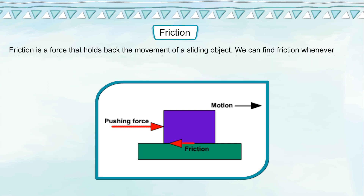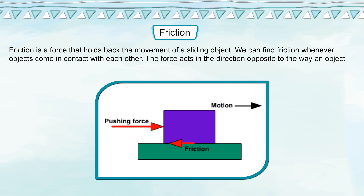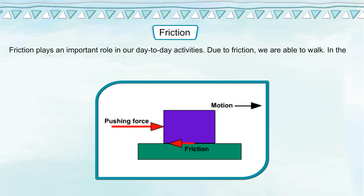This force is called friction. Friction is a force that holds back the movement of a sliding object. We can find friction whenever objects come in contact with each other. The force acts in the direction opposite to the way an object wants to slide. Friction plays an important role in our day-to-day activities.